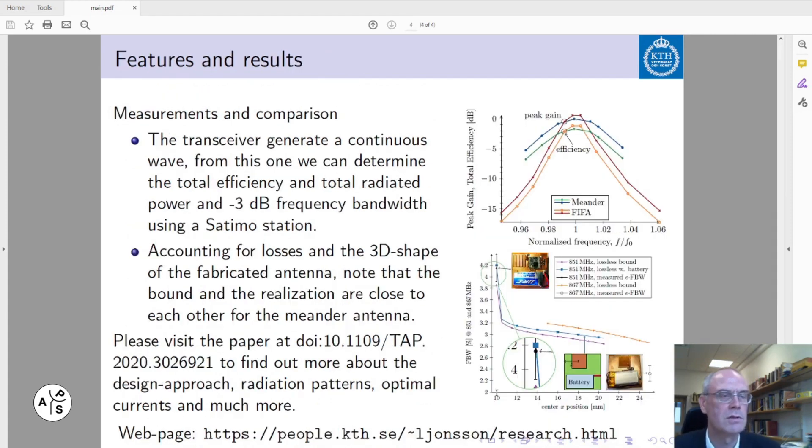We added these items making the antenna a three-dimensional structure in order to use a clever method to measure the total efficiency, total radiated power, and frequency bandwidth using a Satimo station. Some of these results are plotted in this figure.